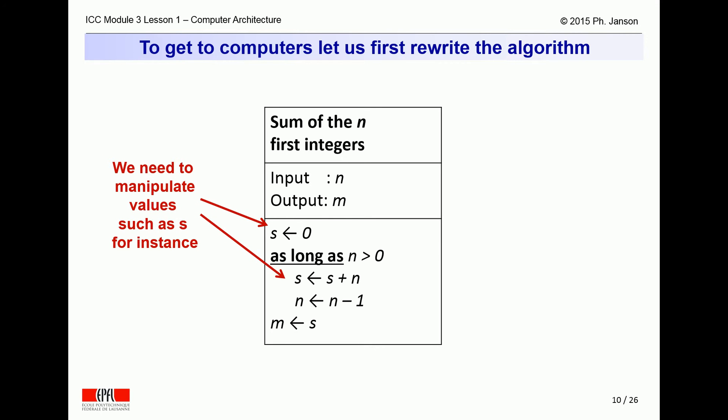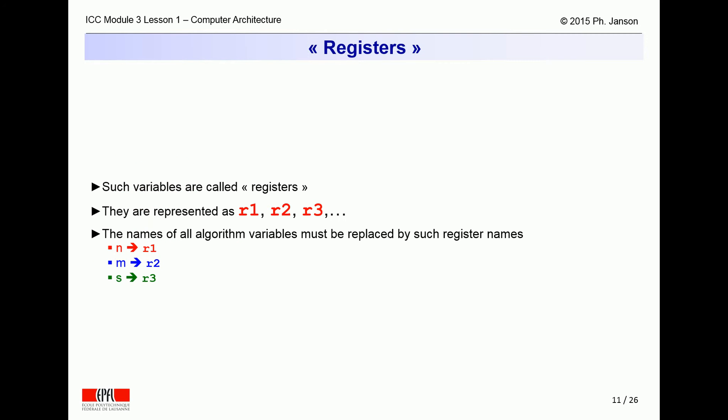First of all, it would need to be able to manipulate the content of variables such as s and n. s and n are, however, meaningless names for a computer. Computers use so-called registers to record the values of variables as they evolve. And these registers are simply numbered r1, r2, r3, r4, etc. So for computers to be able to understand algorithms, we write them so that they use numbered registers instead of freely named variables. For computers, what people perceive as variables are simply numbered registers.